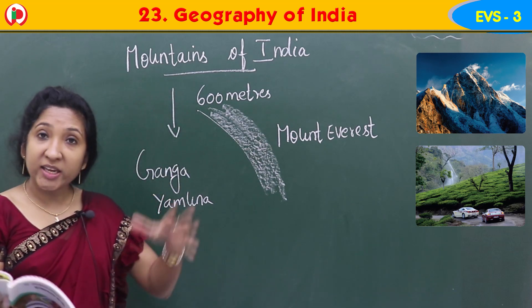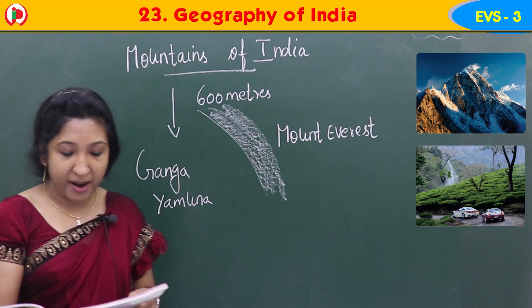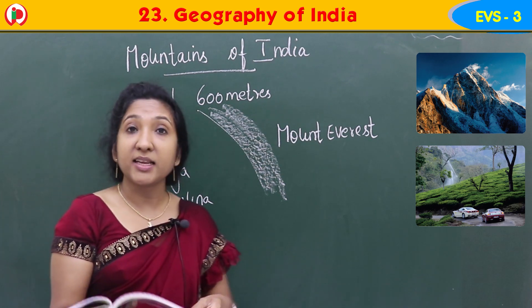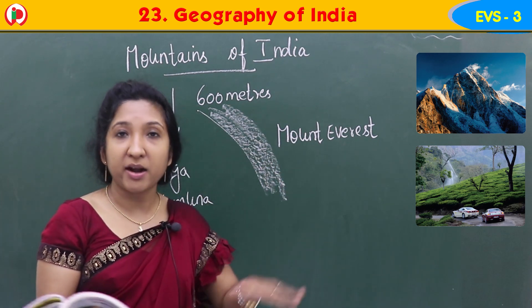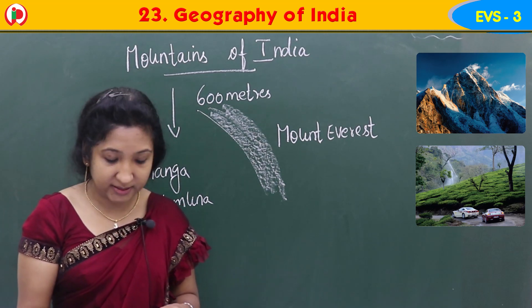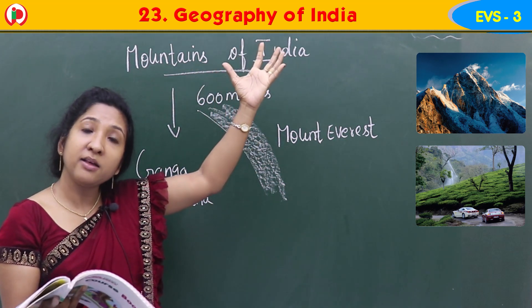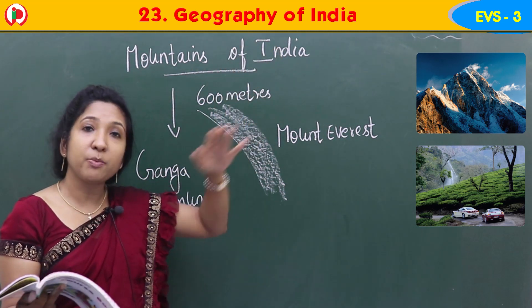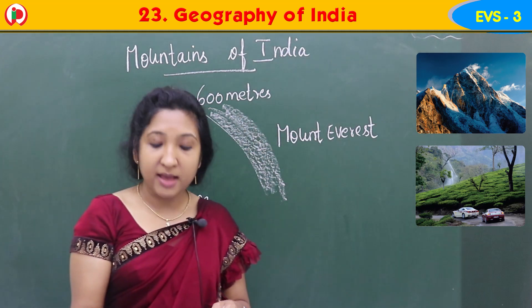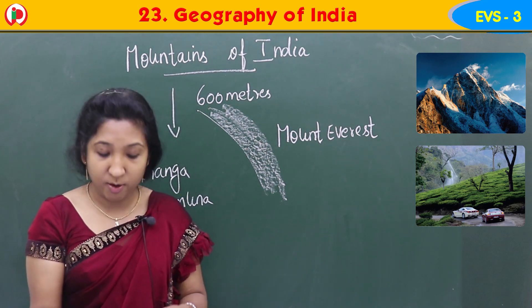Mount Everest is located at the border of Nepal. The central and southern part of India contains lower mountain ranges — not higher mountain ranges like in the north. In the south and central portions there are mountain ranges but they are lower mountain ranges. These lower mountains are known as hills. Hills are smaller than mountains.